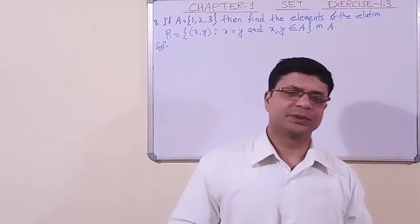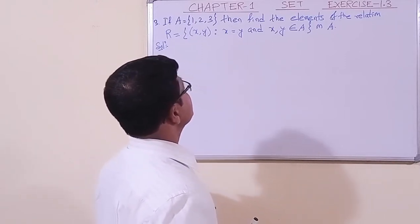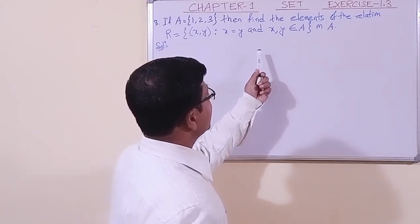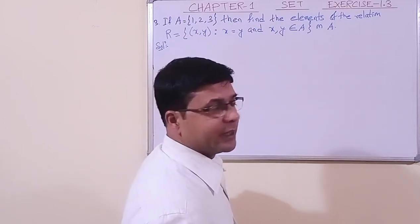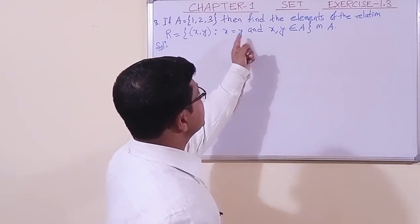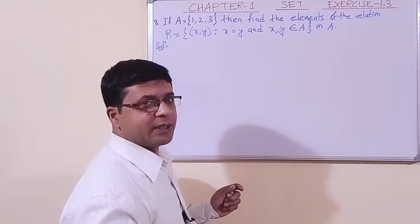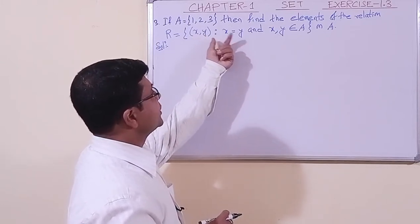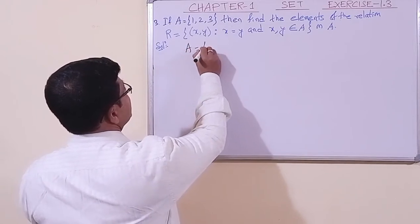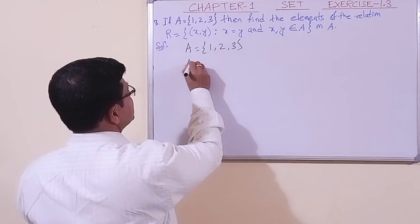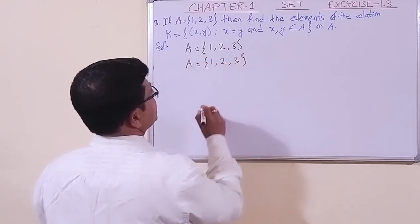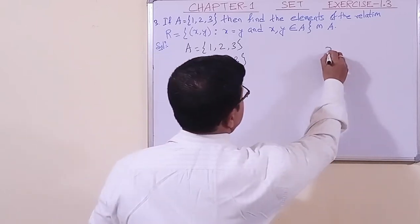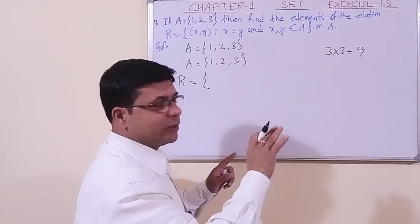Now we have taken question number 3. If A is a set with three elements {1, 2, 3}, find the elements of the relation R with ordered pair (x, y) such that x equals y and x, y belong to set A. Here the relation is that the two elements are equal — so this is the identity relation. The identity relation has the first and second components equal.